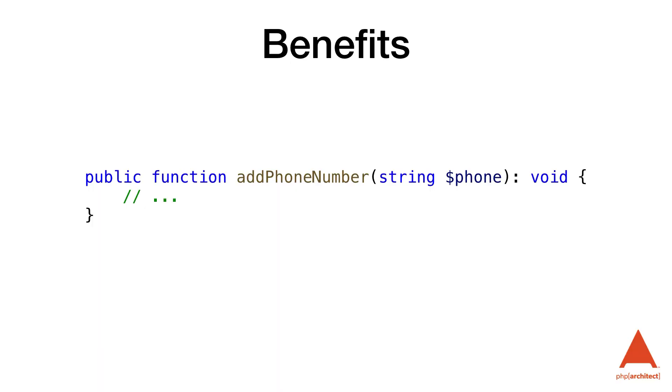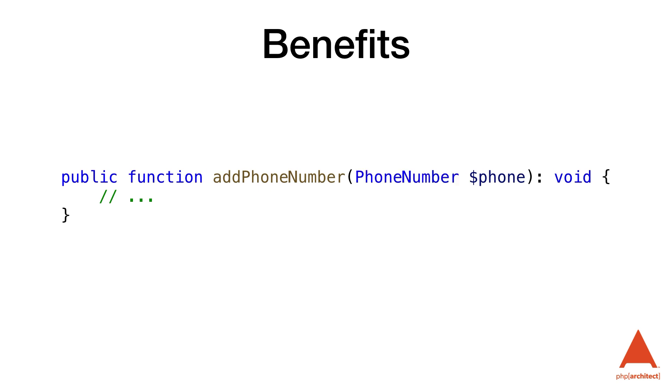Benefits: there are numerous benefits to using value objects. The first is cleaner code. Value objects are useful for writing clean code because instead of writing a function that requires a string, we can very clearly write a function that requires a phone number class. This makes it easier to read and easier to reason about, and we don't need to figure out which phone format we should use — dashes, parentheses, or nothing. Value objects take care of all of that.